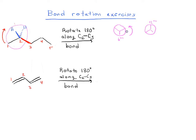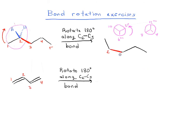So now carbon 1 is at 12 o'clock. That means what was at 2 o'clock is now at 8, and what was at 10 is now at 4. Let's redraw what that looks like. Carbon 1, instead of being down at 6 o'clock in the plane of the page pointing down, is now in the plane of the page pointing up. Let's redraw this with the C2-C3 bond, and then C4 and C5.